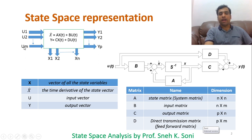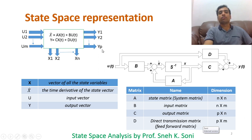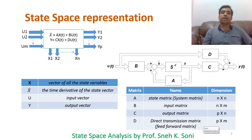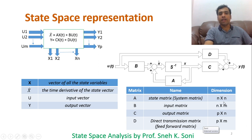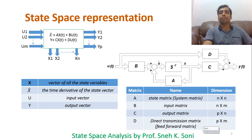The number of inputs is m, because state space can also be applied to MIMO systems — we have already discussed this in the advantages of state space. The number of outputs is p and number of state variables is n. Matrix A is the state matrix with dimension n×n, B is the input matrix with dimension n×m, C is the output matrix with dimension p×n, and D is the direct transmission matrix with dimension p×m.